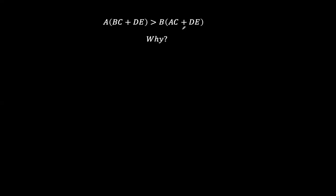So that means that we are comparing a times bc plus de versus b times ac plus de. As we can see, this is greater than this. Why? Because when you multiply a across and b across, this abc cancels out.